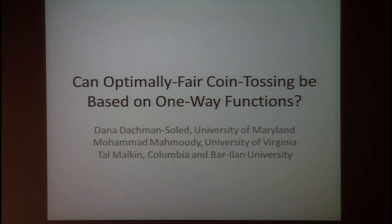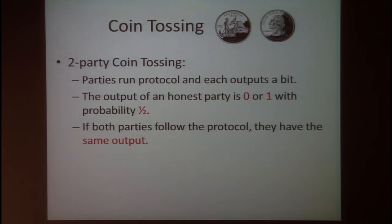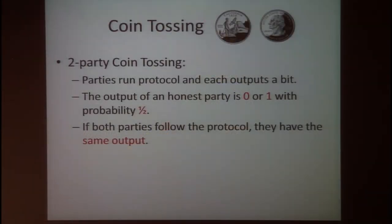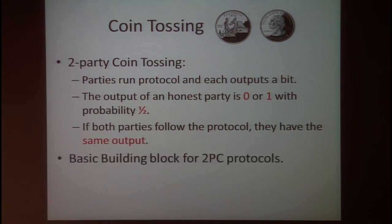In a two-party coin tossing protocol, Alice and Bob run a protocol and each outputs a single bit. The output of an honest party is zero or one with probability one-half, and if both parties follow the protocol honestly, they are guaranteed to output the same bit. Coin tossing is a fundamental cryptographic primitive and a basic building block for two-party computation protocols.